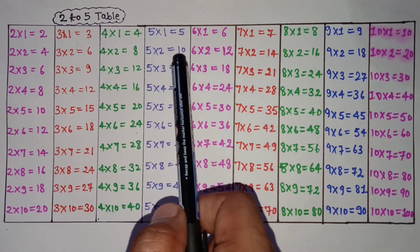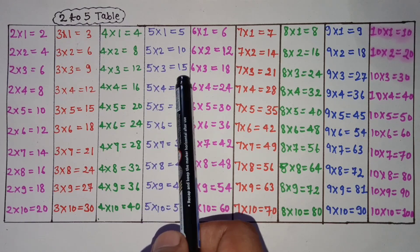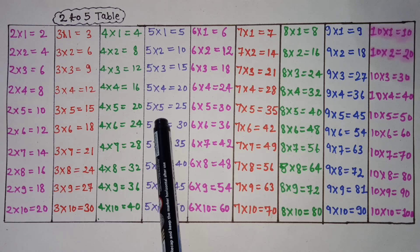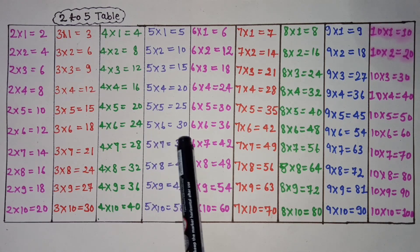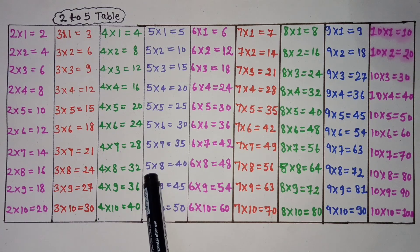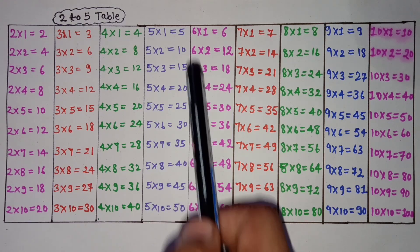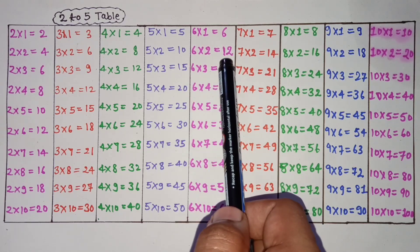5×1 is 5, 5×2 is 10, 5×3 is 15, 5×4 is 20, 5×5 is 25, 5×6 is 30, 5×7 is 35, 5×8 is 40, 5×9 is 45, 5×10 is 50.